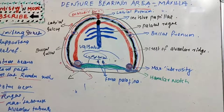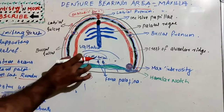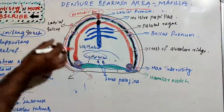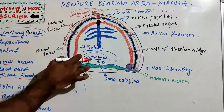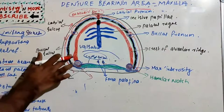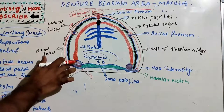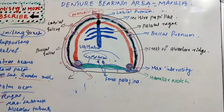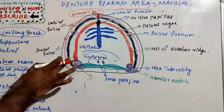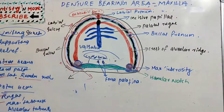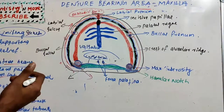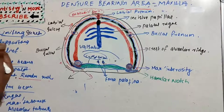The maxillary tuberosity is the bulbous extension of the residual alveolar ridge in the second and third molar area, terminating at the hamular notch. These areas are less likely to resorb, so artificial teeth are not set on the tuberosity region. The tuberosity sometimes exhibits buccal undercuts; if unilateral, this can be utilized for retention.